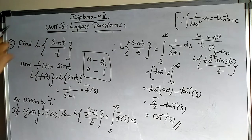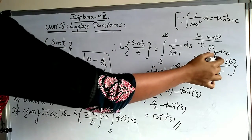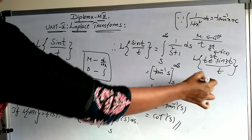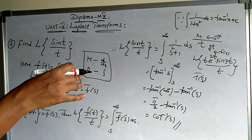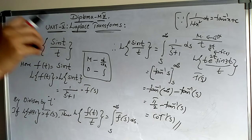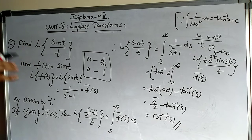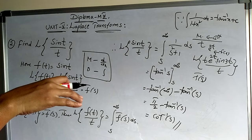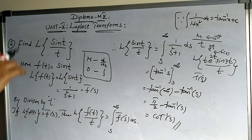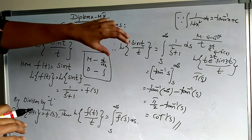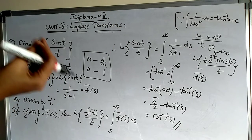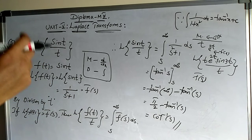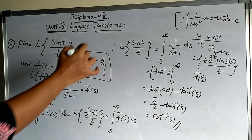So first identify f(t), find F̄(s), write the statement for the relevant property — multiplication by t or division by t — then apply it. Writing statements earns partial marks even if simplification is incomplete. In the next video, the convolution theorem will be explained. Thank you.